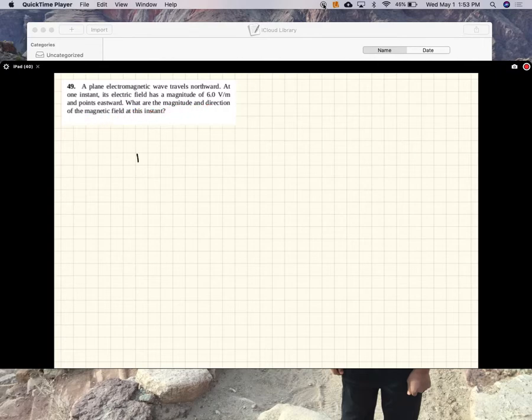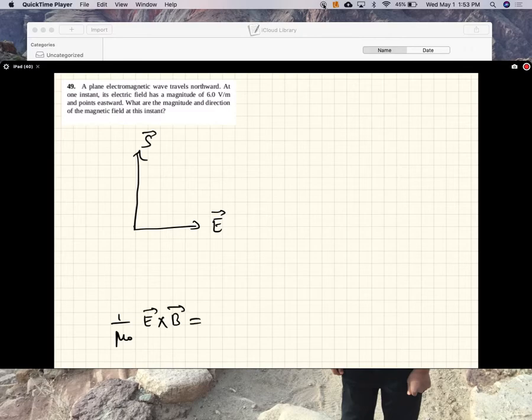Okay, so here is the S vector, E vector. And you saw that one over μ₀ E cross B is S, so E cross B. So if you use the right-hand screw rule, if you turn E to B, that screw should move in that direction, in the S direction.